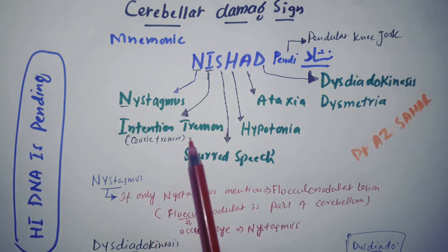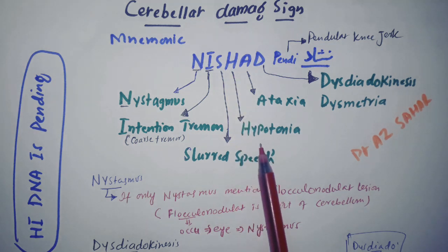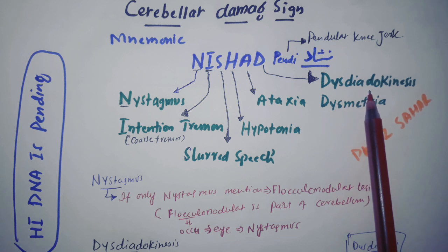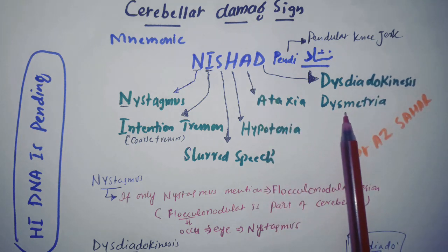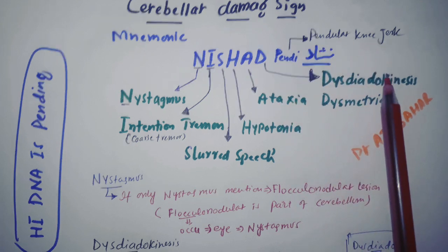N is for nystagmus, I is for intention tremor or coarse tremor, S is for slurred speech, H is for hypotonia, A is for ataxia, and D is for dysdiadochokinesis, D is for dysmetria, and Pindy is for pendular knee jerk.